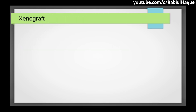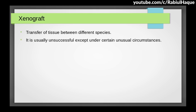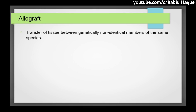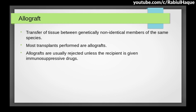Xenograft is the transfer of tissue between different species. It is usually unsuccessful except under certain unusual circumstances — for example, a graft of a baboon heart into a human. Allograft is the transfer of tissue between genetically non-identical members of the same species. Most transplants performed are in fact allografts, and they are usually rejected unless the recipient is given immunosuppressive drugs.